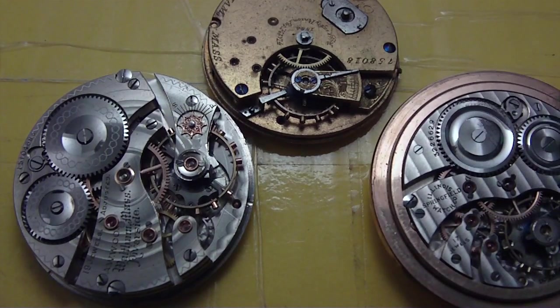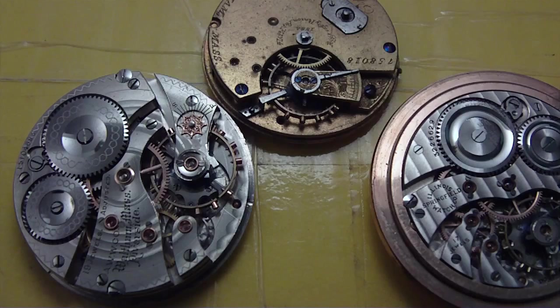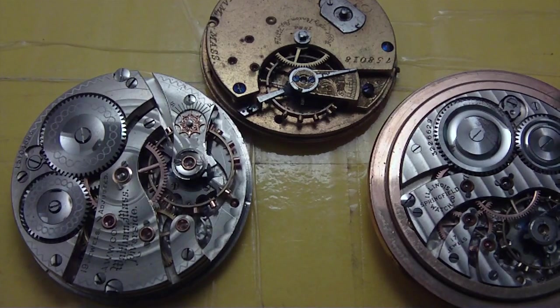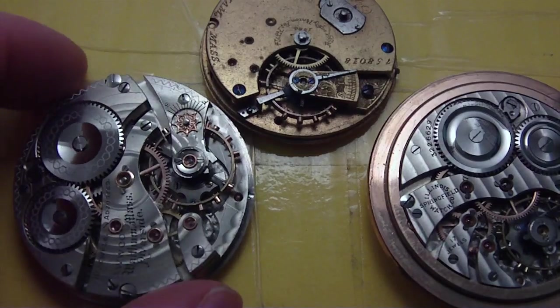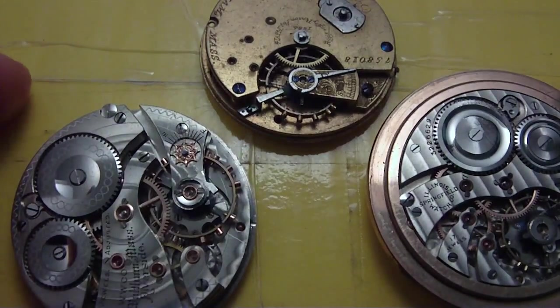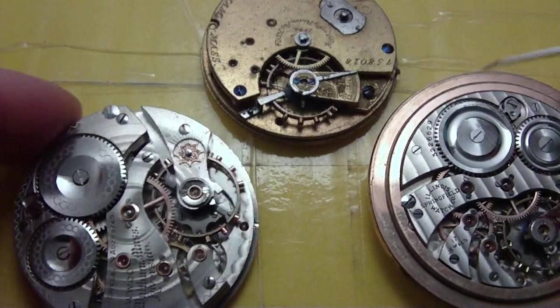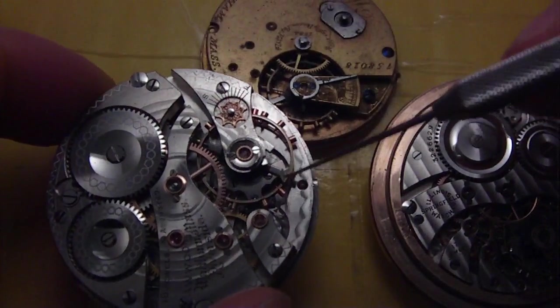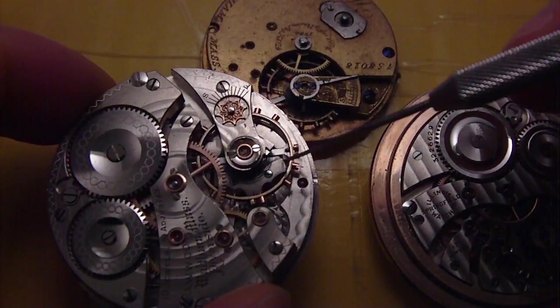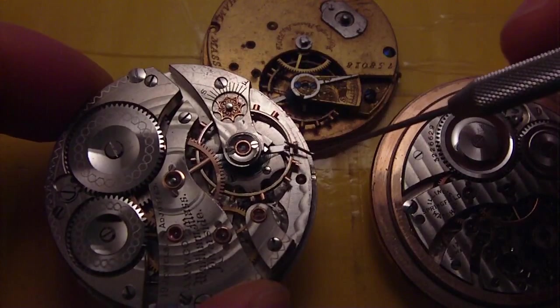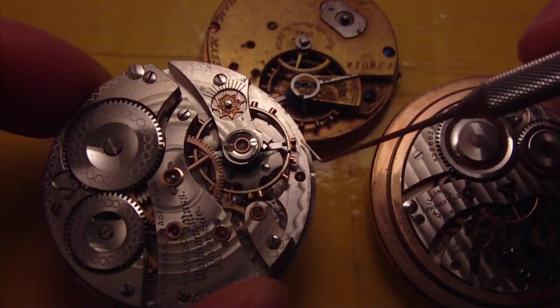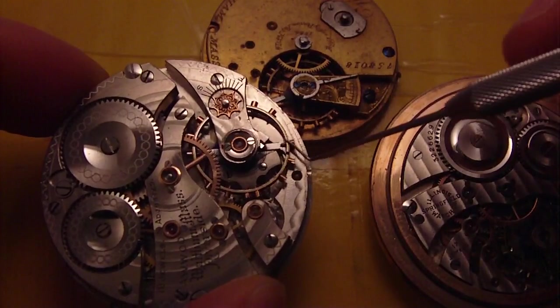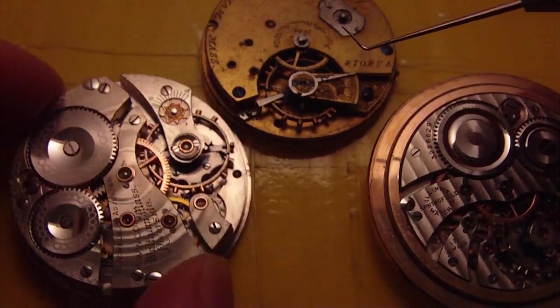One way to find out is to open it up and test the balance staff, which I am going to show you right here on this watch. You can see how it moves around a lot. I'm barely touching it and it just wiggles all over the place. That could be a broken balance staff.